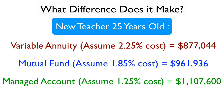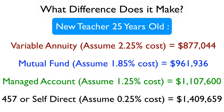Going back to our example of the 25-year-old teacher contributing for 35 years — if you have a 457 plan or a low-cost self-directed 403B option (and this applies to 401k savers too), assuming an all-in cost of only a quarter of one percent — just 25 basis points — your balance 35 years from now would be $1.4 million. Compare that to the variable annuity at two and a quarter percent, where you'd have $877,000. That is a tremendous difference at retirement, worth doing research to find the best plan available to you.